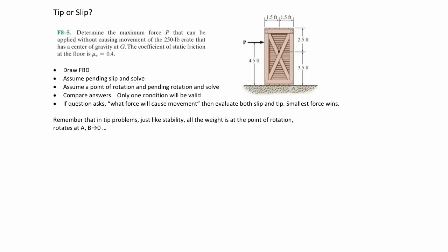The first problem we're going to tackle is a tipping-or-slipping problem: when I push on this box, will it tip or will it slip? The crate weighs 250 pounds and we have a coefficient of friction. The approach is: first draw a free body diagram and assume impending slip to solve for the slipping condition; then assume a point of rotation and solve for impending tipping; then compare the two answers — only one condition will be valid. Remember, at tipping all the weight concentrates at the point of rotation, and if it rotates at A, the reaction at B goes to zero.